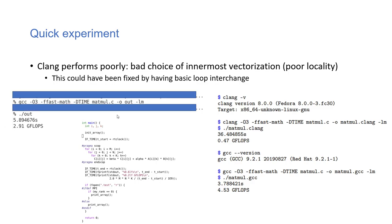First, we're going to look at performance measurements for naive matrix multiplication. Here's the algorithm used, tried on both Mac and Linux. Linux uses GCC and Mac uses Clang. There's a big difference in performance between Mac and Linux, which the author attributes to bad choice of innermost vectorization and poor locality on Mac.